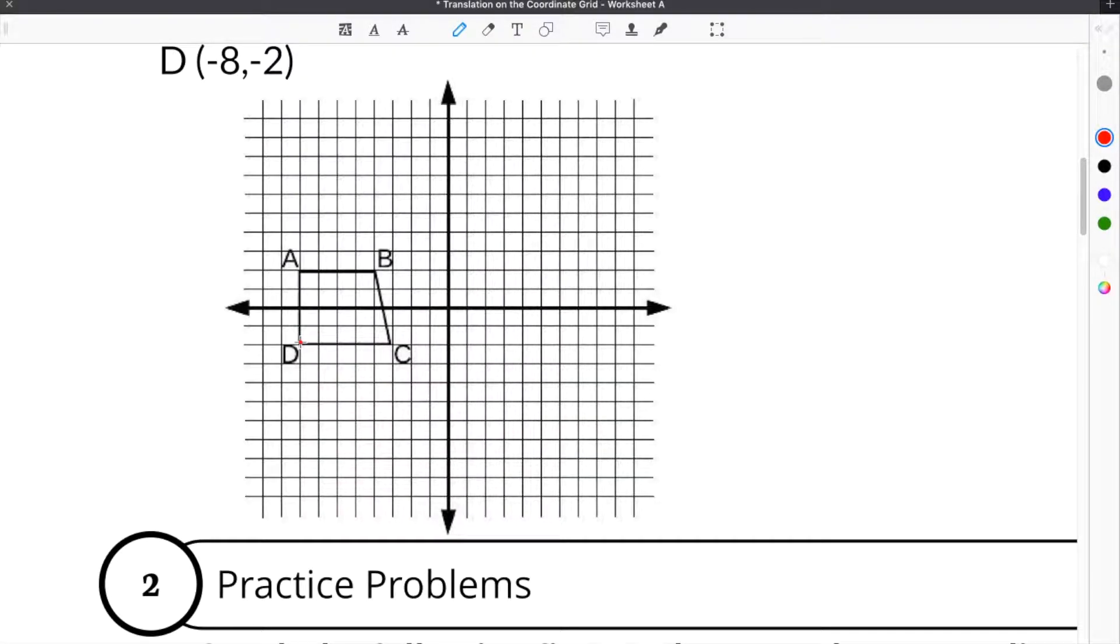Translation in math refers to when you take a shape or a point on the coordinate grid and you slide it on the coordinate grid. When translating in math, your x and your y coordinates control different ways to translate or slide. The x will control if the figure goes left or right, and then the y will control if it goes down or up.